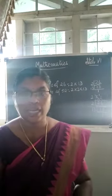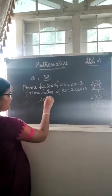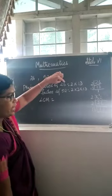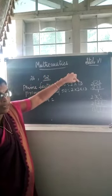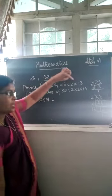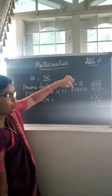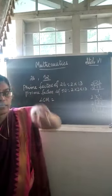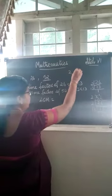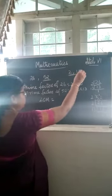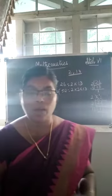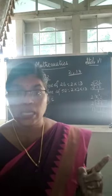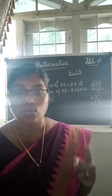Now we have to write the LCM. LCM is equal to — see children, how many factors do we have? In 26, we have 2 and 13 as the factors. So 2 is a factor and 13 is a factor. Here also in 52: 2 into 2 into 13, so 2 is a factor and 13 is a factor. In both numbers, we have got 2 factors — which are 2 and 13. Now, what we have to do is find the maximum number of times each factor comes in both numbers.